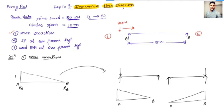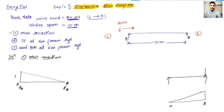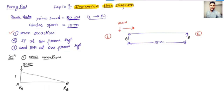For different load positions the diagram changes, but for a point load the diagram looks like this. The diagrammatic representation for the support due to the 80 kilonewton load is already drawn. Now, for calculating Ra — the 80 kilonewton load is acting over a length of 15 meters — so the calculation for Ra is as follows.